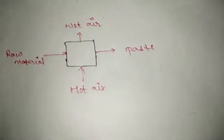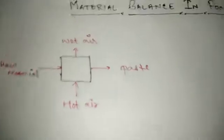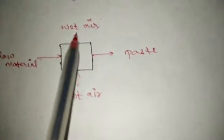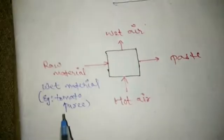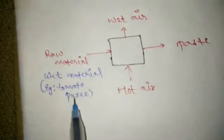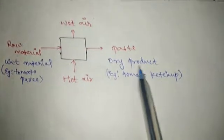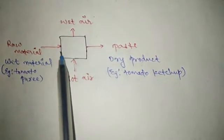A system has a definite boundary. We put the raw material in from one side and take the paste or concentrated product out from another side. We put hot air in from one side and wet air comes out the other side. Raw material can be a wet material — for example, tomato puree — and the paste can be a dry product, for example, tomato ketchup. So we see here that it is a dryer or evaporator.